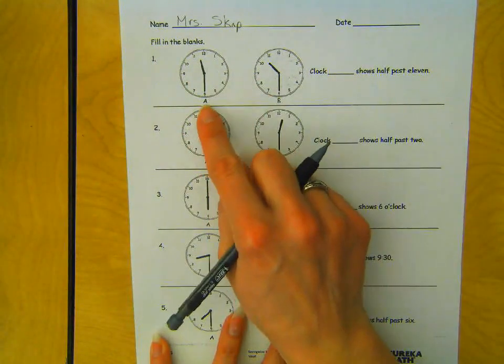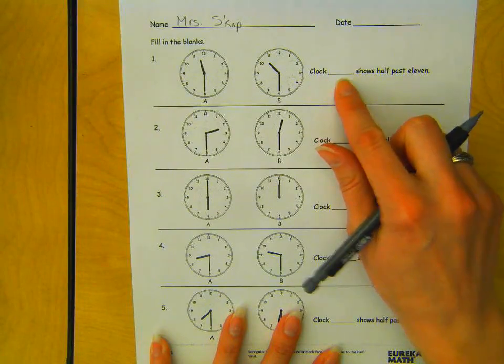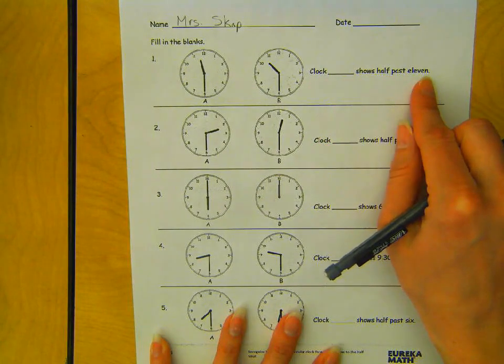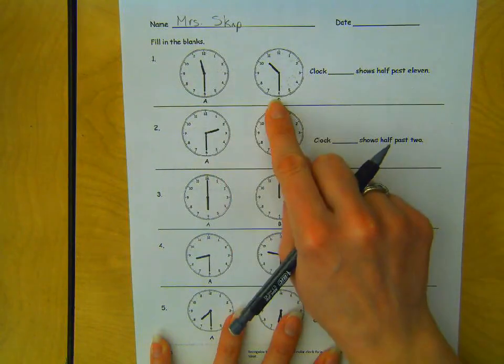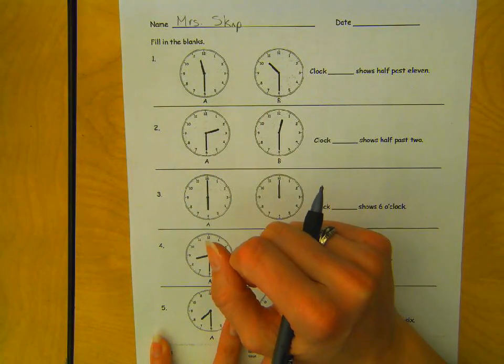So we have clock A and clock B, and it says clock blank shows half past 11. So which one of these clocks, A or B, shows half past 11?